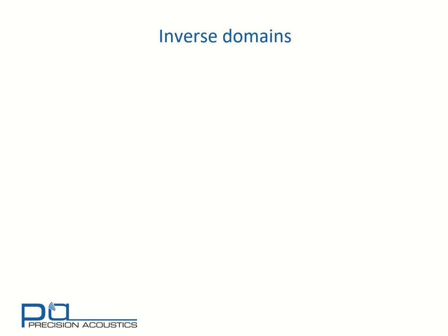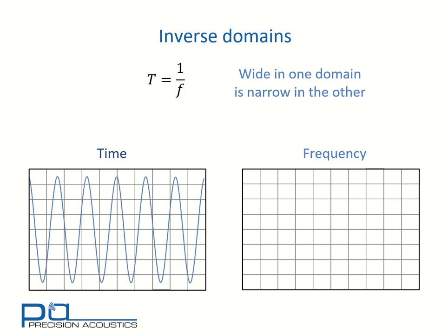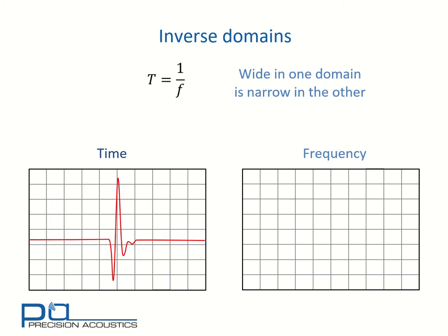It's also important to realize that time and frequency are inverse domains, as we saw from the time period equation. Anything that is wide in one domain is narrow in the other. Consider a time and frequency representation of some signals. A sinusoidal signal carries on infinitely in time; therefore its frequency representation is infinitesimal — infinitely narrow, just a single spike, a delta function. If we look at something that's a very short pulse in time, this has a very broad, wide frequency spectrum with content at a wide range of frequencies.